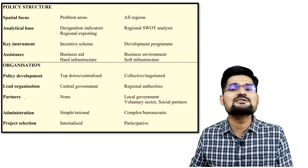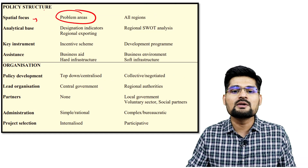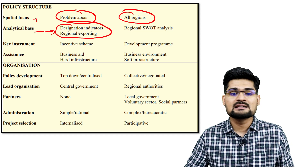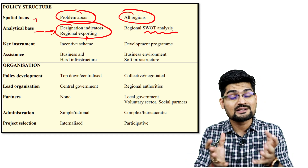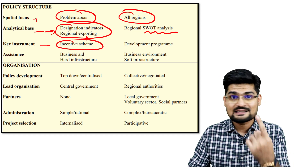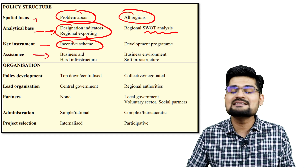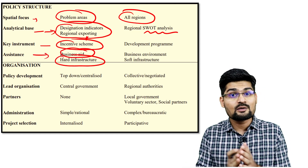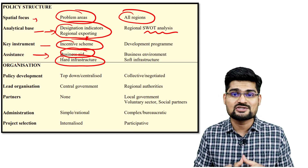Policy structures also changed with time. Earlier, the spatial focus was mainly on problematic areas; now it is overall development. Earlier approaches used designation, indicators, and regional exporting; now it is about SWOT analysis — strengths, weaknesses, opportunities, and threat analysis. Earlier the key instrument was an incentive scheme; now it is development programs in specific areas. Assistance shifted from business aid and infrastructure aid to business development aligned with environment and soft infrastructure creation.